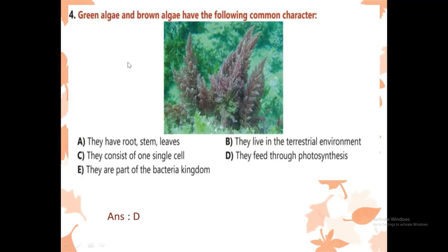Now, green algae and brown algae have the following common character: do they have roots, stems, leaves? No — incorrect. Do they live in a terrestrial environment? No. Do they consist of a single cell? No — these are multicellular organisms. Do they feed through photosynthesis? Yes. Are they part of the bacteria kingdom? No — they are plants. So they feed through photosynthesis. This is the correct answer — answer D.